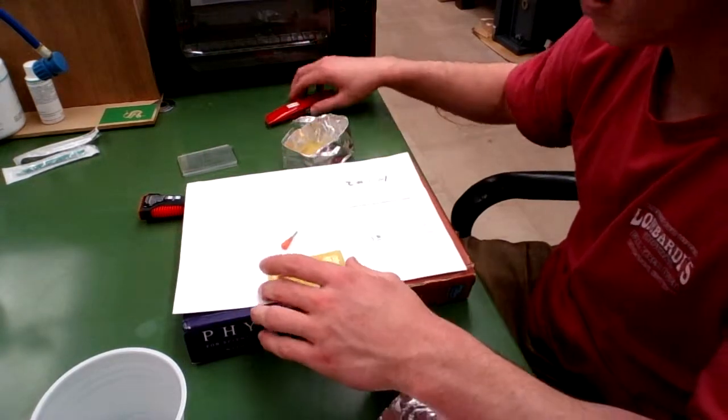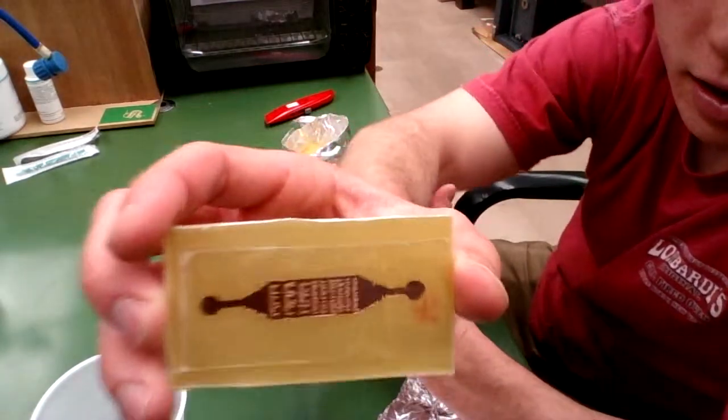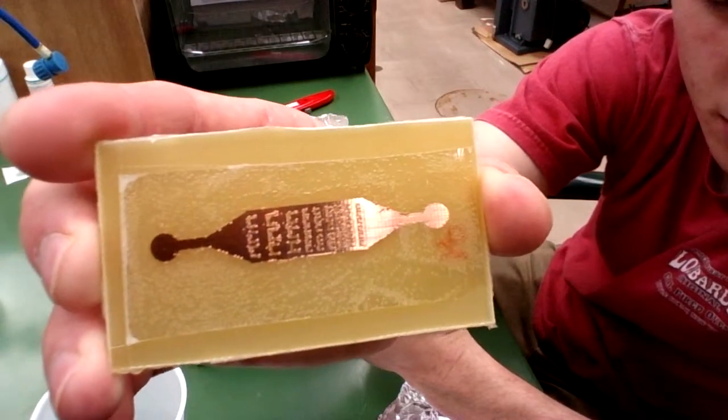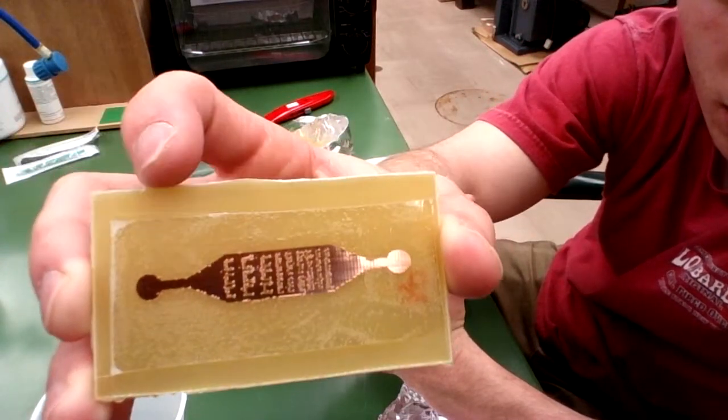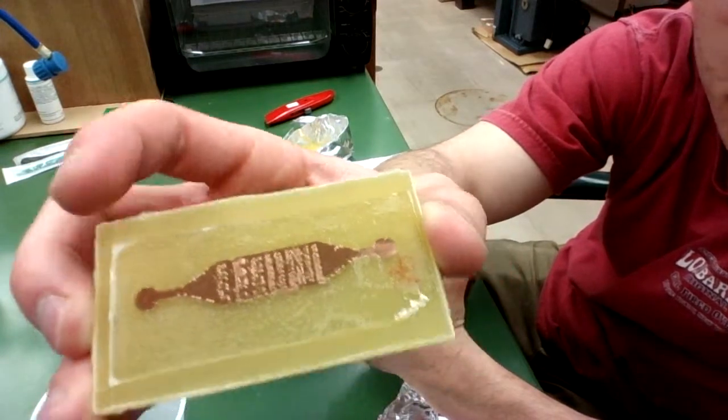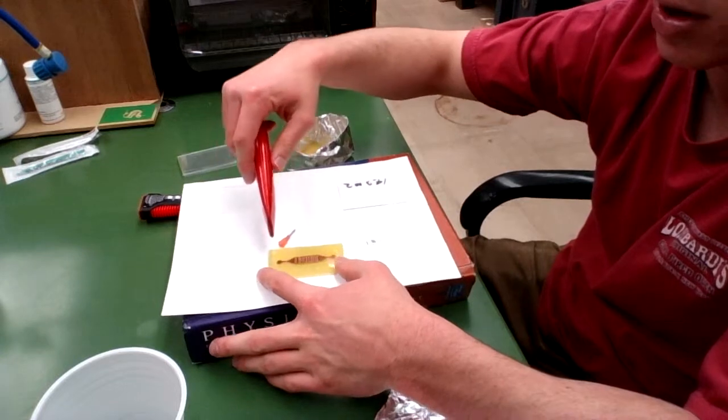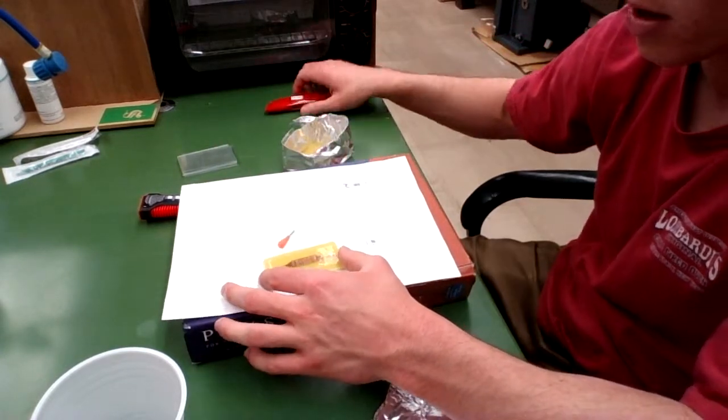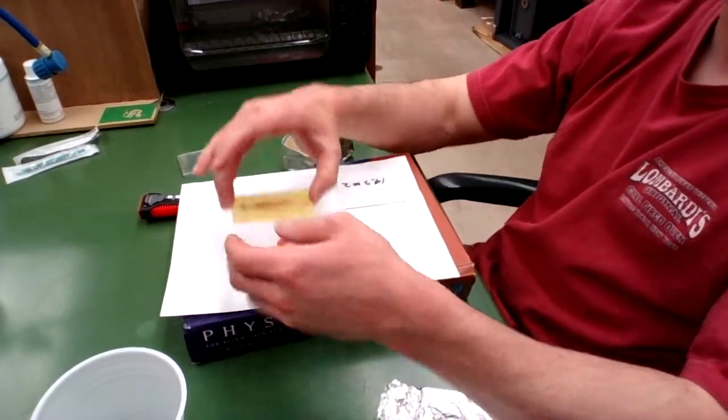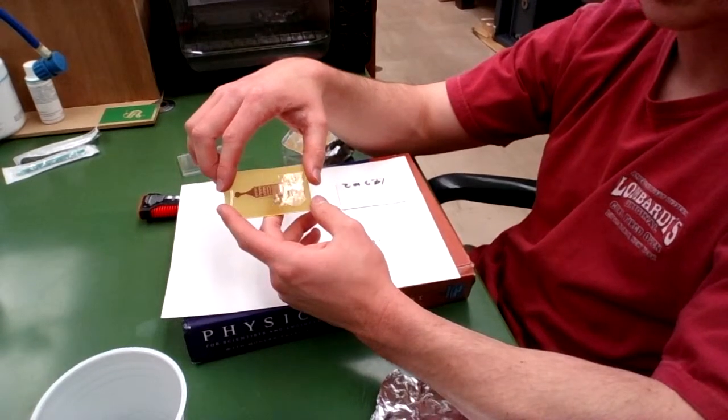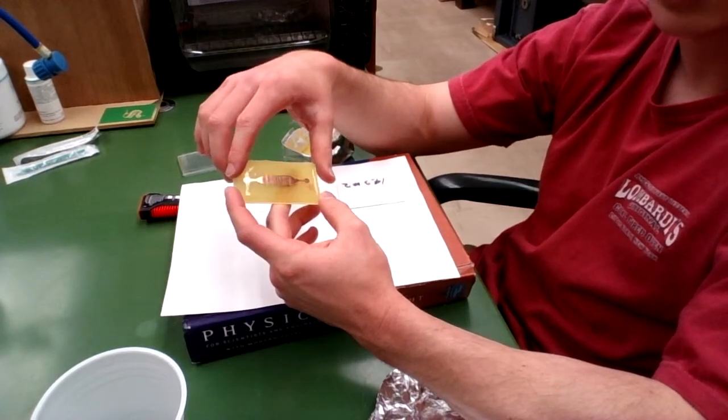Alright, so first I've cut out my design, cut off the edges using my box cutter so that I have clean edges around my device. So all I did was take off the sides of it essentially. And now what I'm going to do is carefully peel it up, making sure not to tear the device as it's pretty thin.